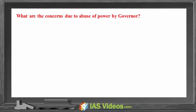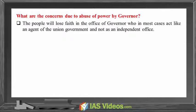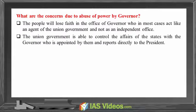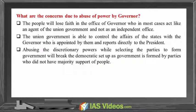What are the concerns due to the abuse of power by the governor? The people will lose faith in the office of the governor, who in most cases acts like an agent of the union government and not as an independent office. The union government is able to control the affairs of the state through the governor, who is appointed by them and reports directly to the president. Abusing the discretionary powers while selecting parties to form government will break the democratic setup, as government is formed by parties who did not have the majority support of the people.